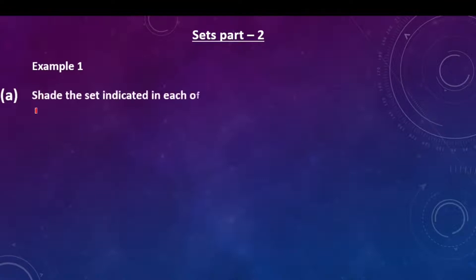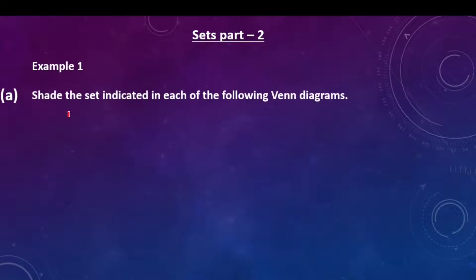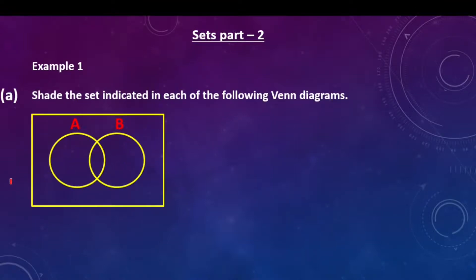Example number one says: shade the set indicated in each of the following Venn diagrams. We have this set here and we are told to shade A intersection B complement.